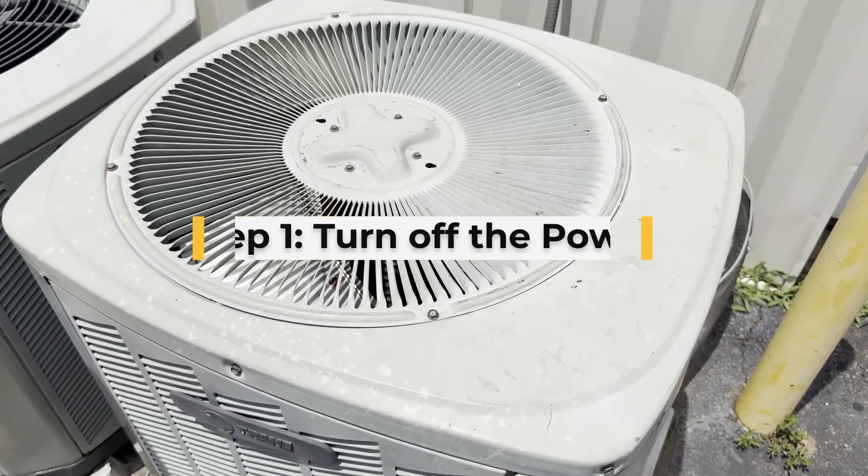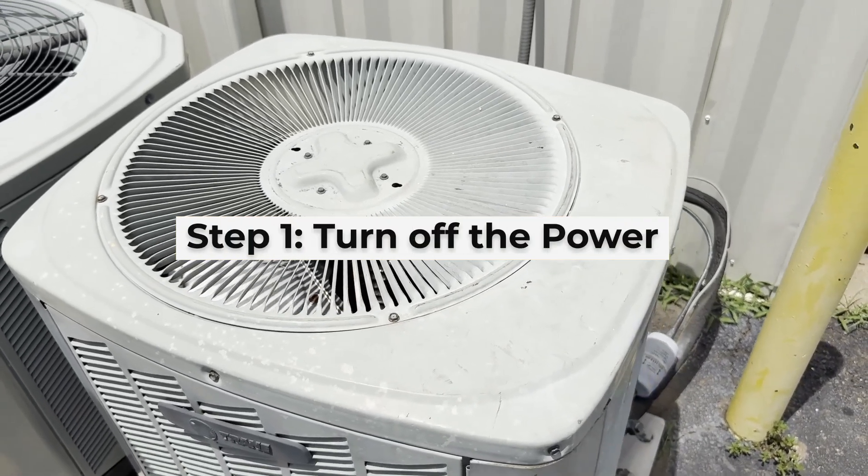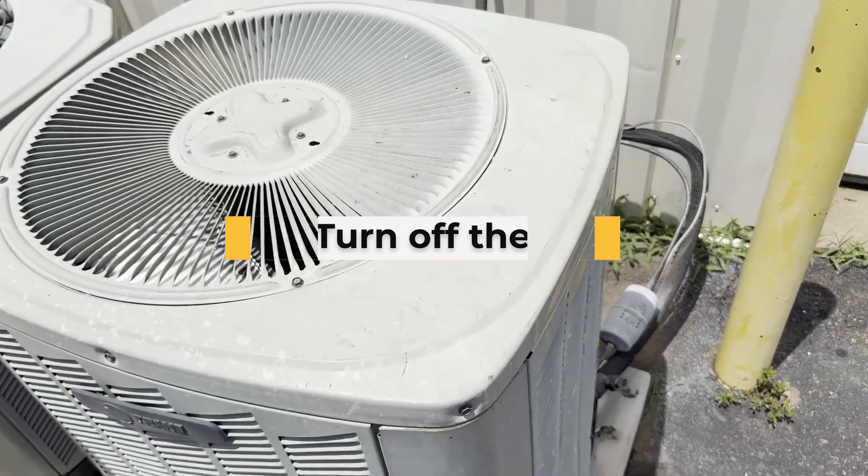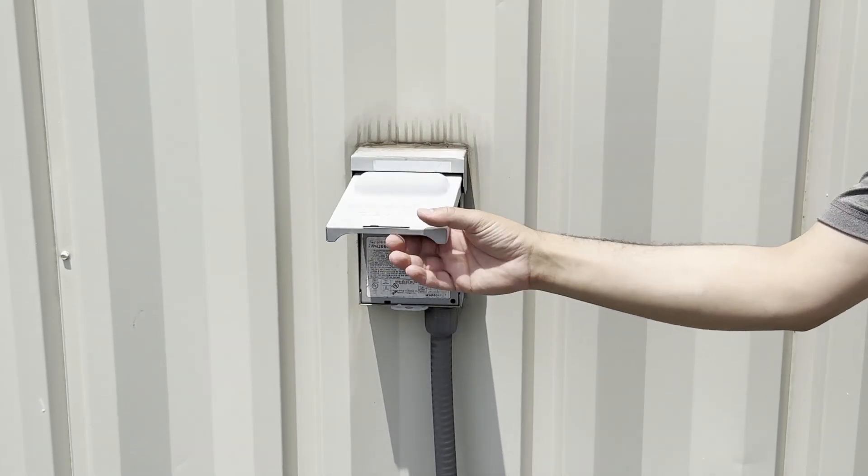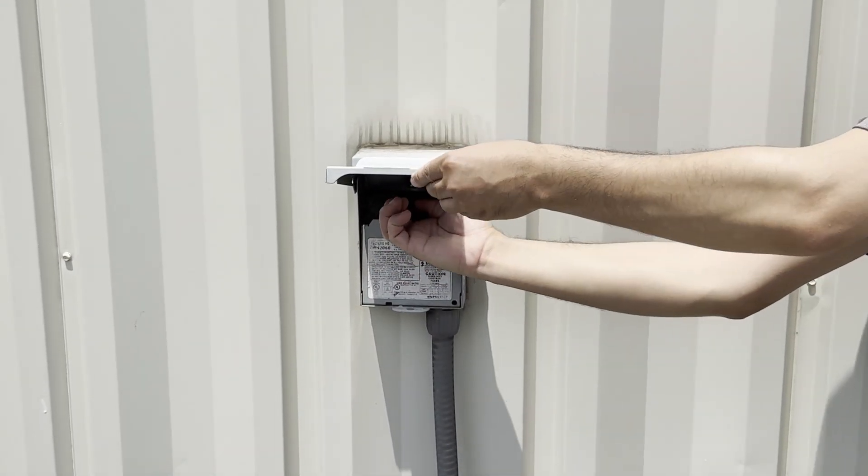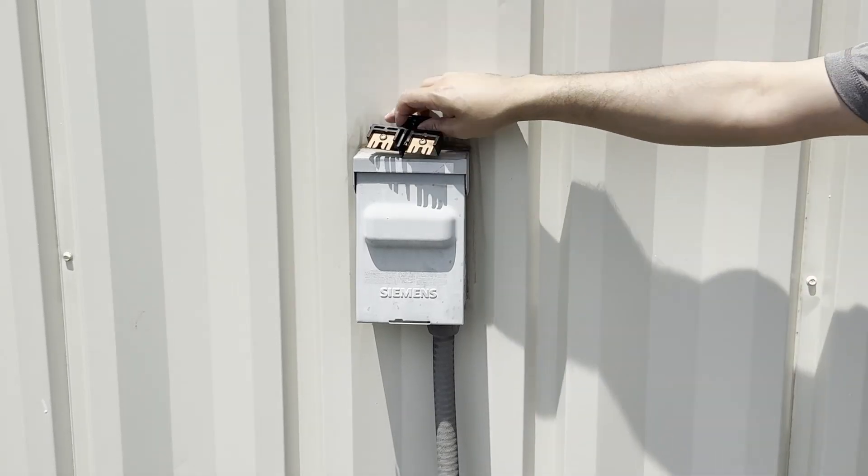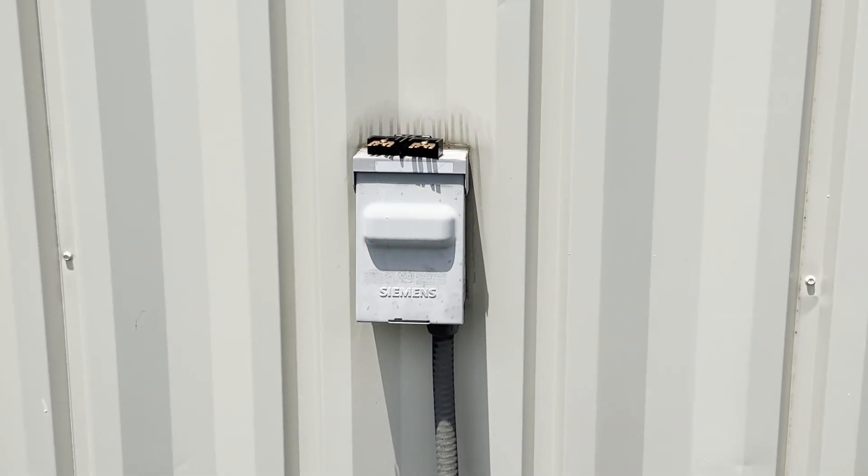Step 1: Turn off the power. Safety is always first, so before touching anything, make sure the power is off. Find your disconnect box next to the unit. It usually has a pull-out plug. Remove it completely and set it aside. If you're not familiar with electrical work or your local codes, don't risk it. Call a licensed HVAC Pro.